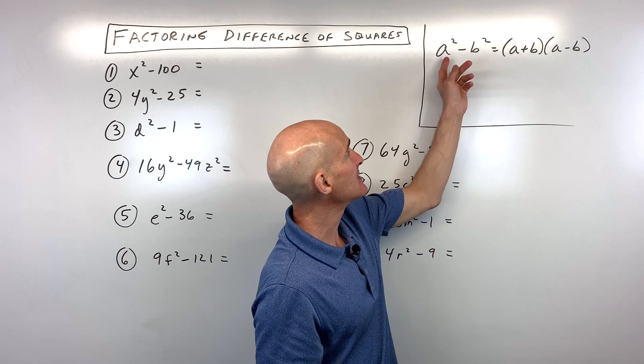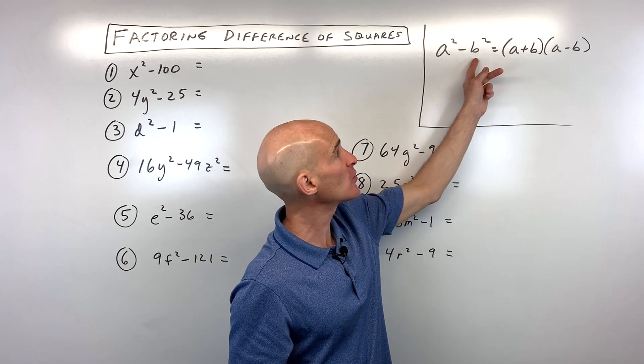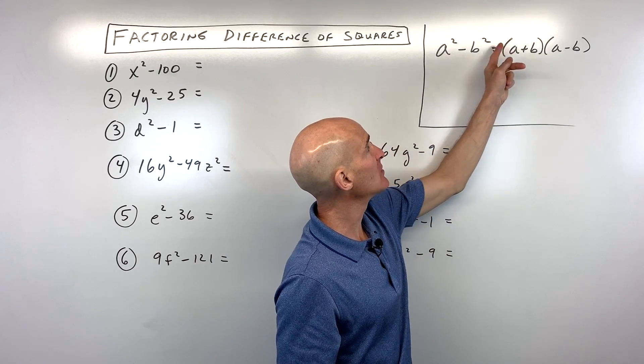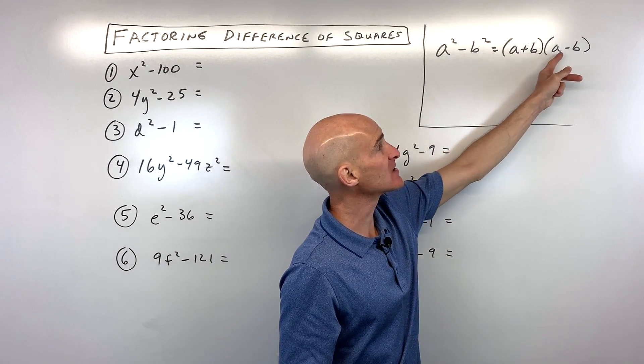But the key thing is to recognize that it's a perfect square minus a perfect square. And when you take the square root of this first quantity, that's going to be your a value. And when you take the square root of the second quantity, that's going to be your b value.